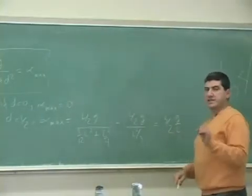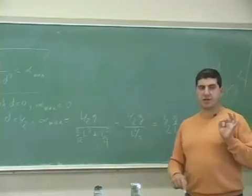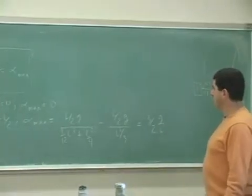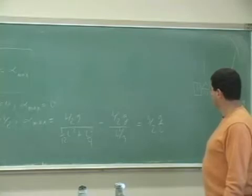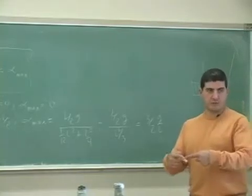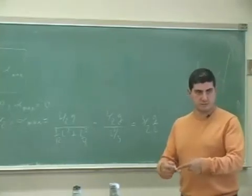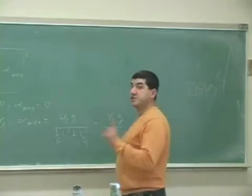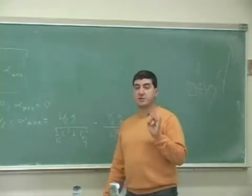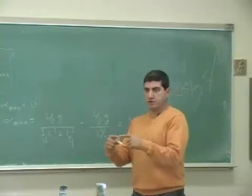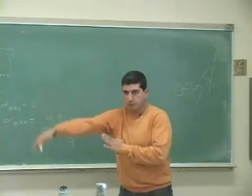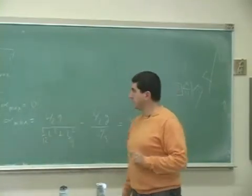So that's the maximum acceleration: alpha equals three halves G over L if you hold it from the end. That's actually the maximum angular acceleration you can achieve. By holding it at the end, you give it more torque, you see?